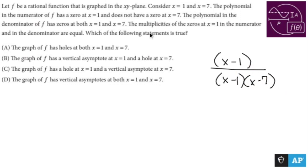The multiplicities of the zeros at 1 in the numerator and in the denominator are equal. So however many x minus 1s are up here, literally the same exact amount are down there. So whatever happens, you would cross them out no matter what, if that's what you're supposed to do.